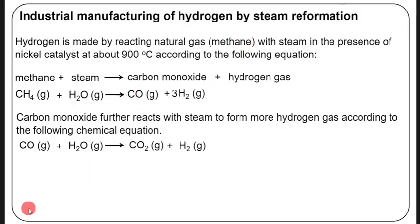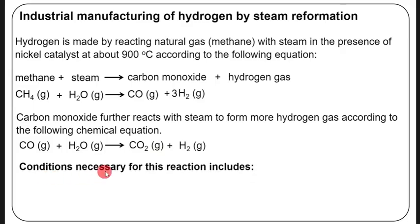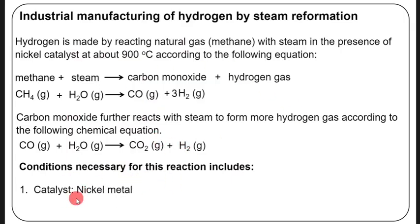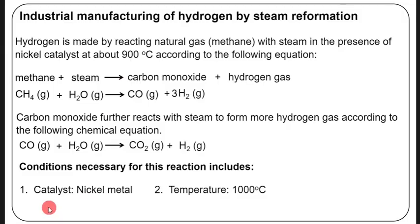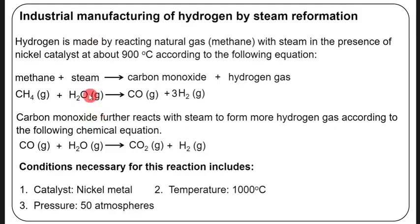Now let's look at the conditions necessary for this reaction. Number one: a catalyst such as nickel. Number two: a temperature of about 900 to 1000 degrees Celsius. Number three: a pressure of 50 atmospheres. These are the conditions required for the steam reformation reaction — they are very important and may be asked.